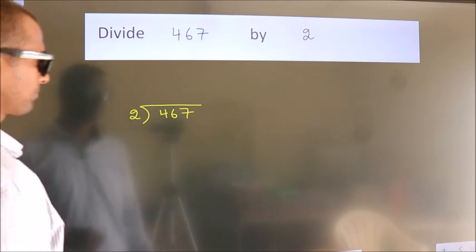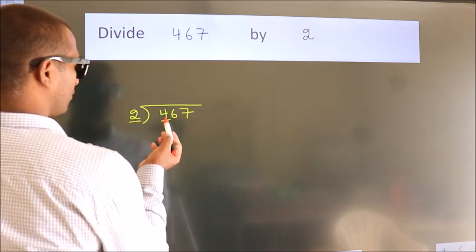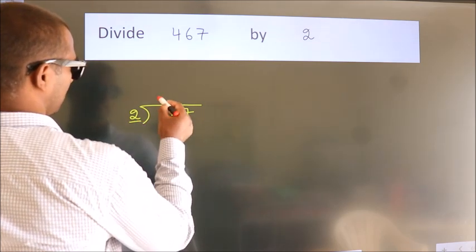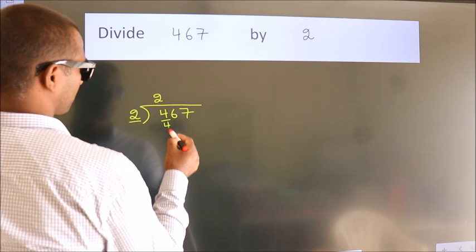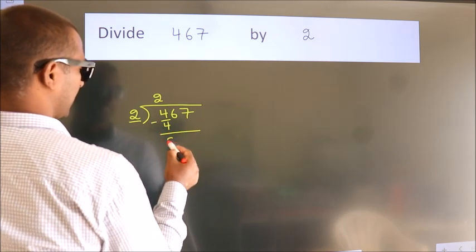Next. Here we have 4, here 2. When do we get 4? In 2 table. 2 times 2 is 4. Now, we should subtract. We get 0.